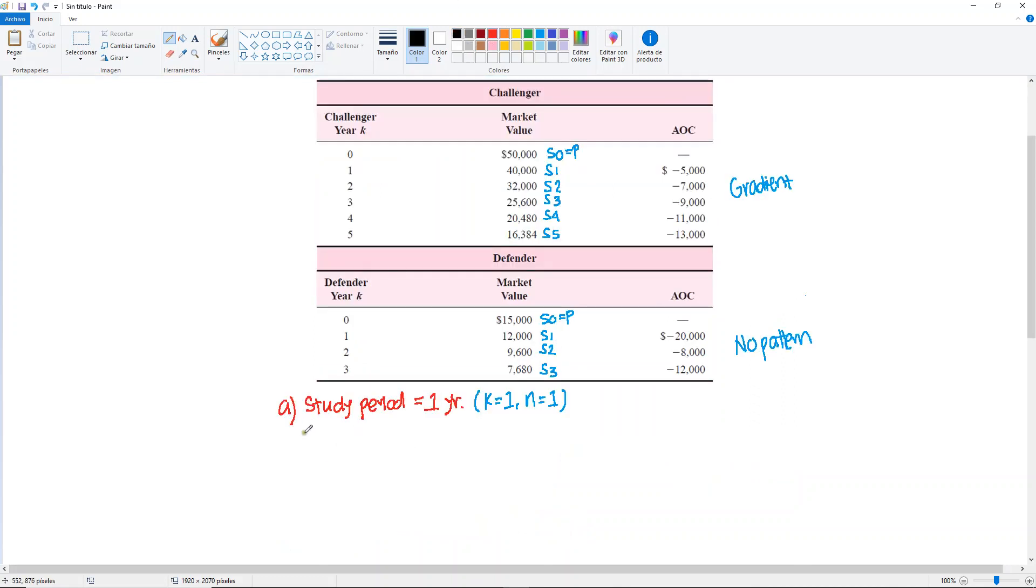So we're going to do annual worth for the challenger, because we already know both of them are going to be 1. So we just differentiate it with the subscript C and D. The annual worth for the challenger, it's going to be minus 50,000, we convert this to A, for 10% and one year, plus 40,000,